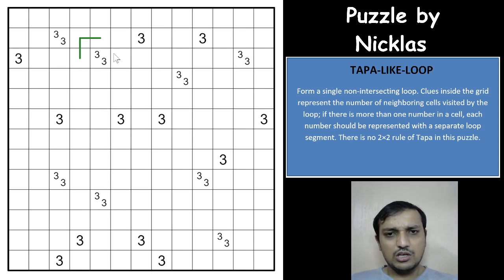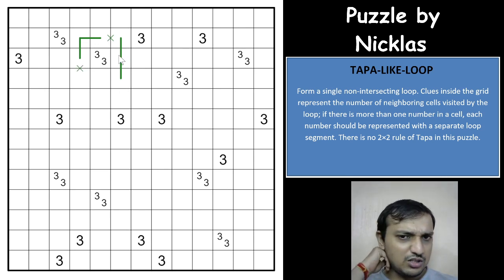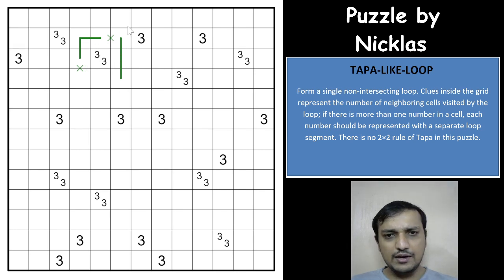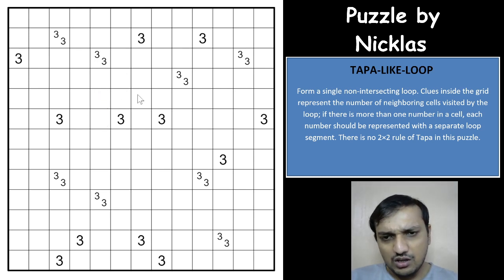If you have 2 numbers, you will have 2 loop segments, each using exactly the number of cells indicated by the clue. The loop cannot intersect or branch, and you have to form exactly one single closed loop.